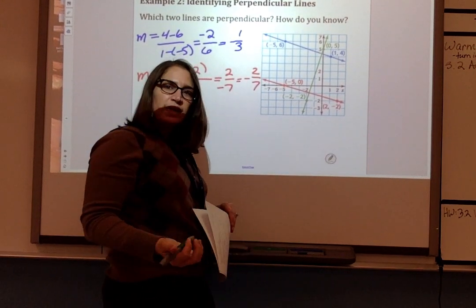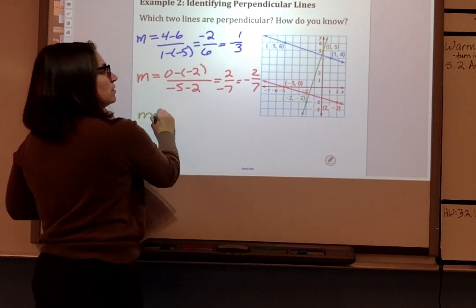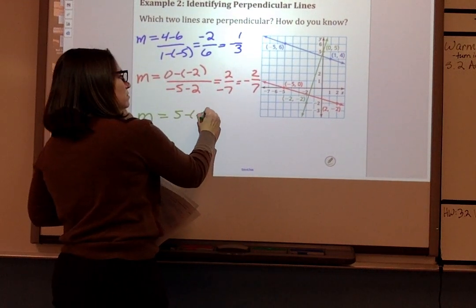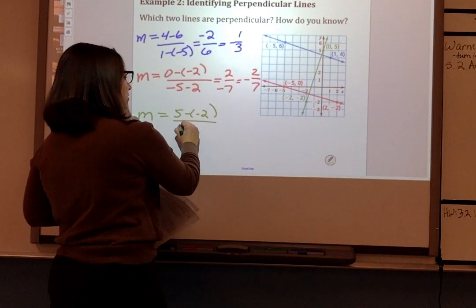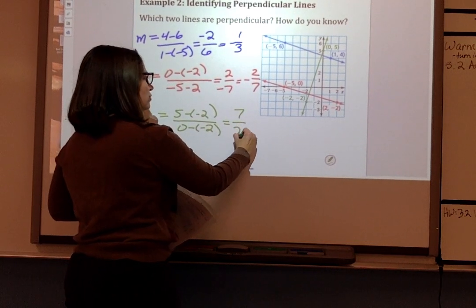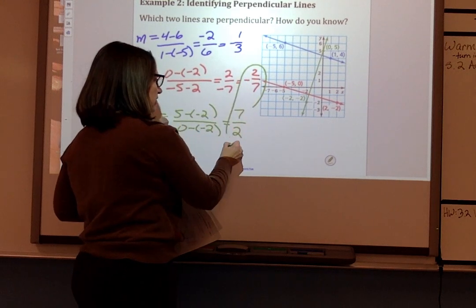Let's look at the green line last and see which of these other two lines it is perpendicular to. So let's do 5 minus negative 2 over 0 minus negative 2. That's 7 over 2. So we see this kind of a similarity here between these two slopes.